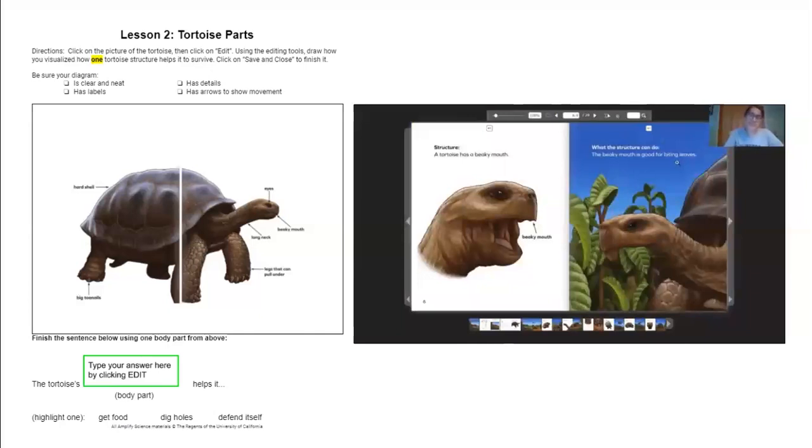So what do you think the topic is now? The topic of this book is about the different structures of the parts of the tortoise and what they do or their function. And remember, structure is a body part. Function is a job. So we're learning about the different jobs that the body parts of a tortoise has. Cool.